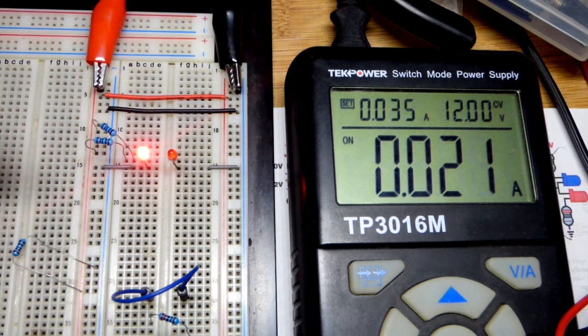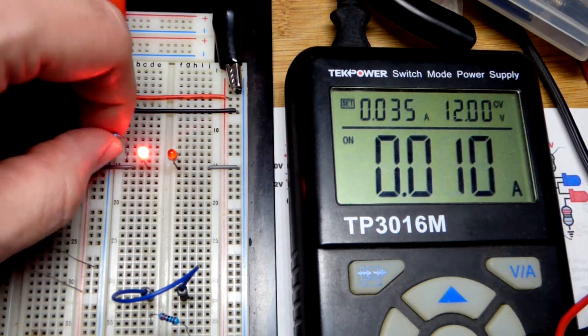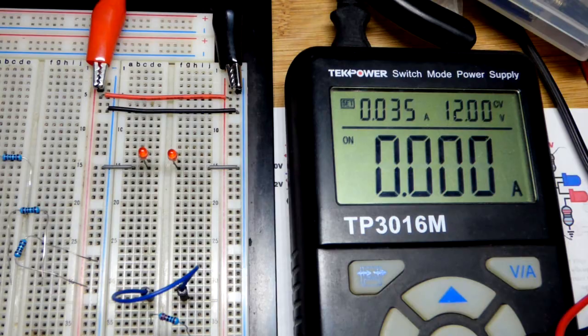If I yank this one now we got just 20 going through that one. If I yank that one now we got 10, and of course zero if I yank them both.